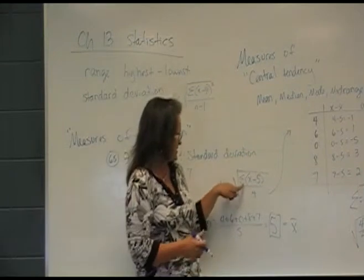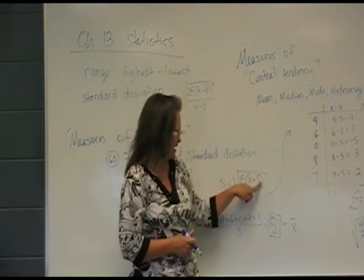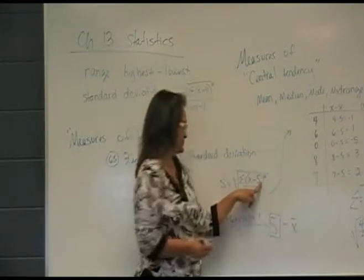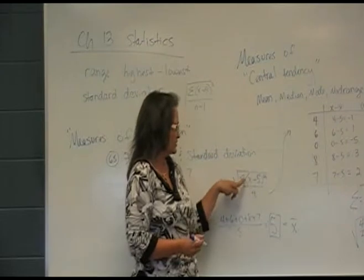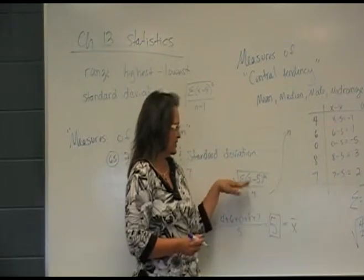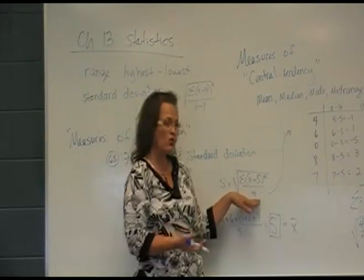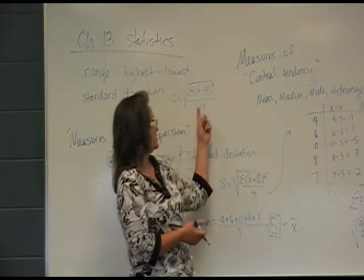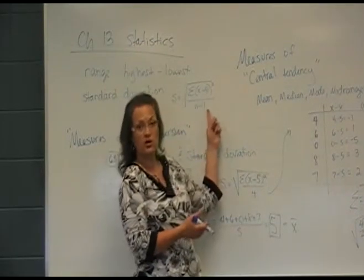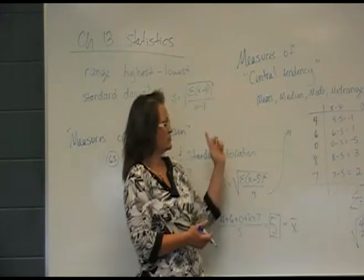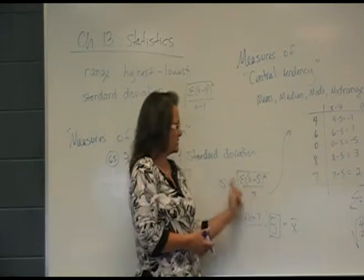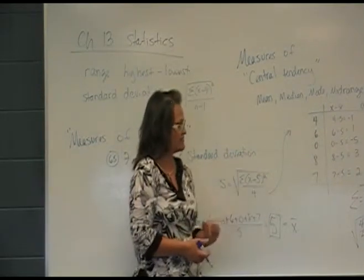We're going to take the sum of each number minus 5, square that, add all those together, and divide by 4 — that's n minus 1, since we have five numbers — and then take the square root of that.